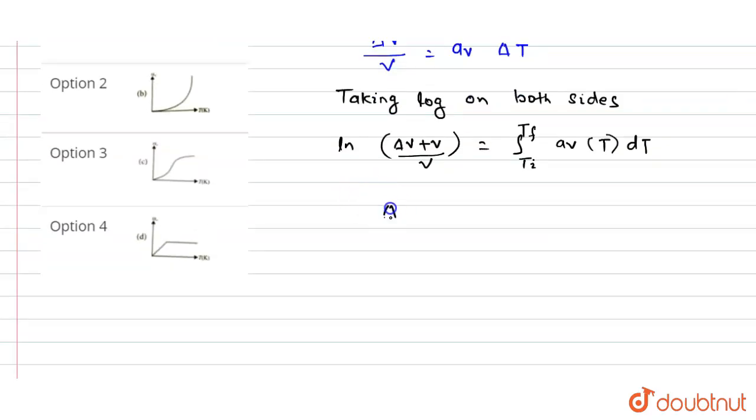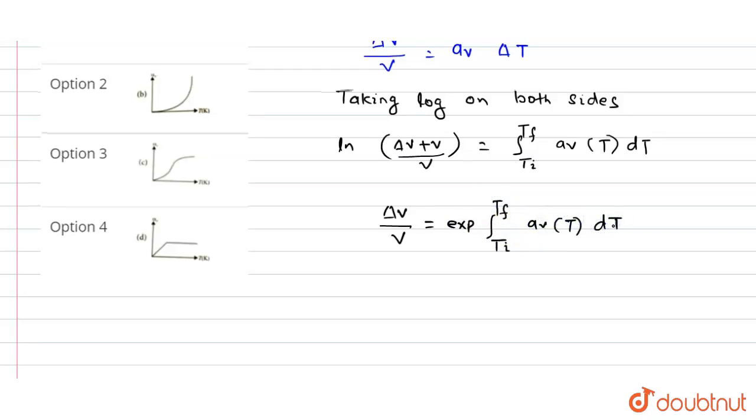So this can be written as delta V divided by V equals exponential of the integral from Ti initial temperature to Tf final temperature of αV into T into dT.